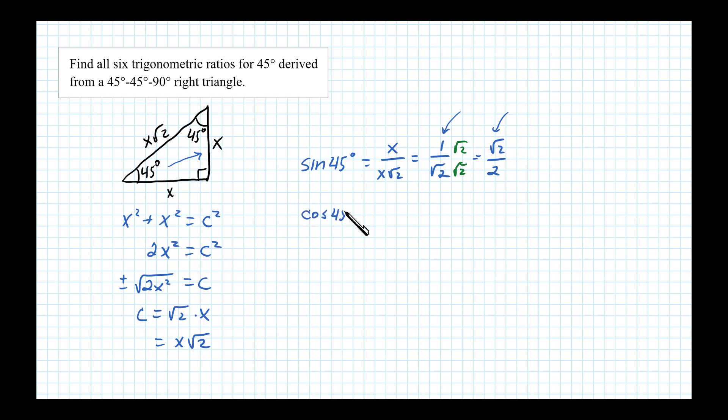Cosine of 45 degrees is defined to be the side adjacent divided by the hypotenuse, so in this case x over x square root of 2. And again the x's cancel, so I get 1 over square root of 2, which is equivalent to square root of 2 over 2.